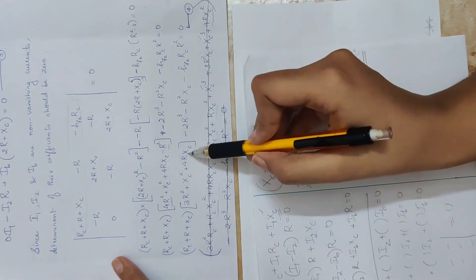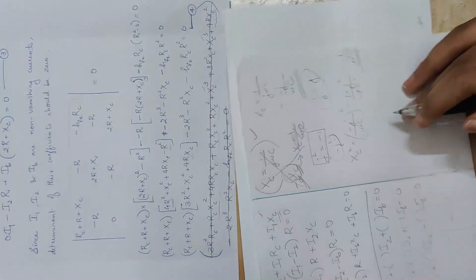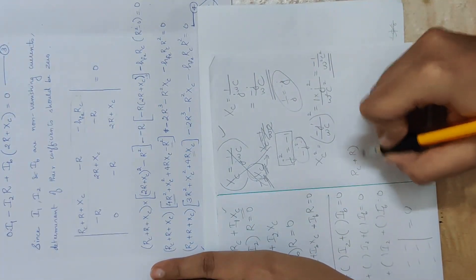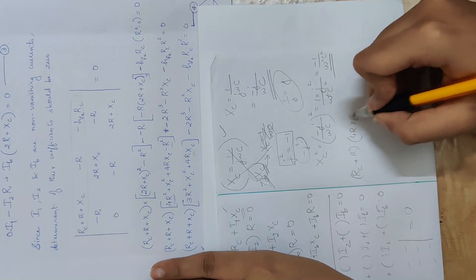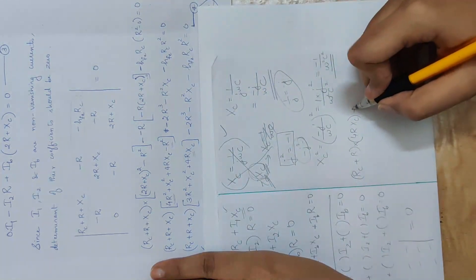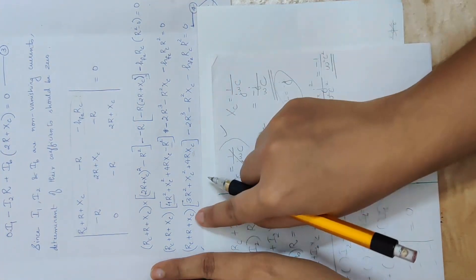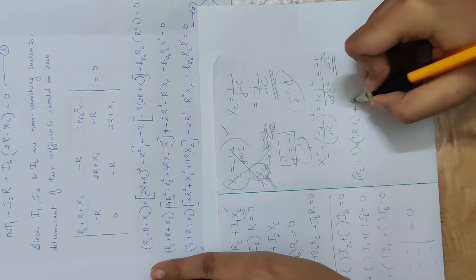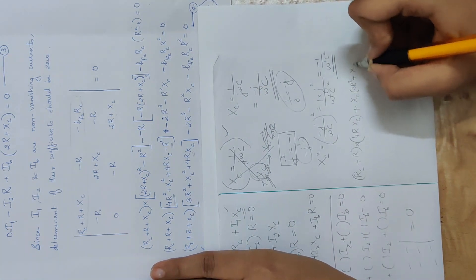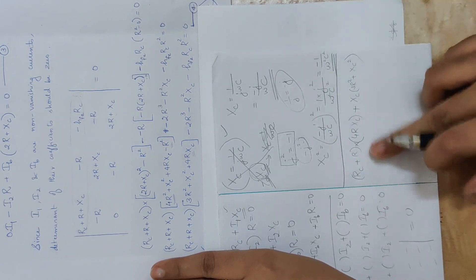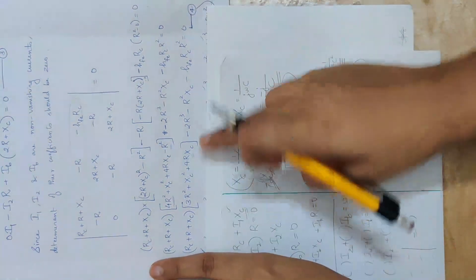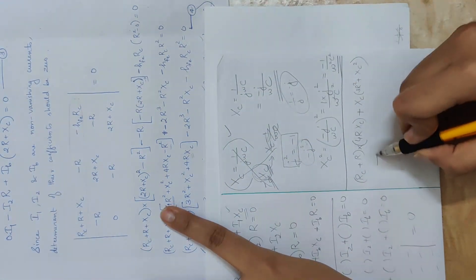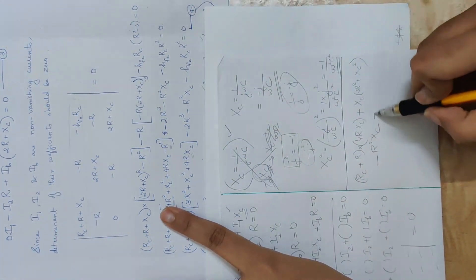Rc plus R into 4Rxc is the imaginary component. This is the real part: Rc plus R into 4Rxc. XC into 3R squared plus XC squared — this is the imaginary part. This is the real part. Minus R squared into XC — this is real. Equal to zero.